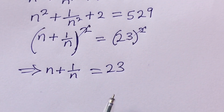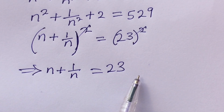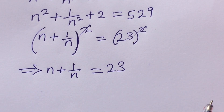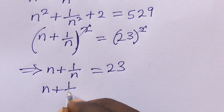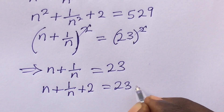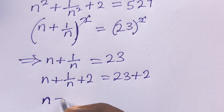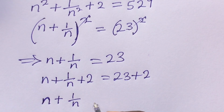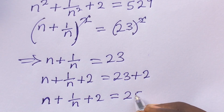Now we need to make this equation a perfect square again. We have 23; if we add 2 we get 25, which is a perfect square. So we add 2 to both sides, giving us: n + 1/n + 2 = 25.